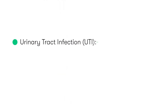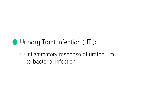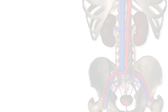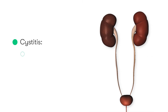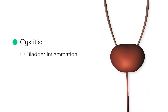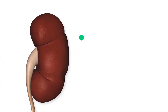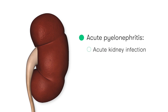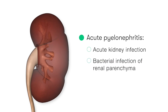Starting with some simple definitions: urinary tract infections, or UTIs, describe an inflammatory response of the urothelium at any point along the urinary tract, typically as a result of bacterial infection. Cystitis is when inflammation and infection is located within the bladder, whereas acute pyelonephritis is an acute inflammation of the kidney involving bacterial infection of the renal parenchyma. Acute pyelonephritis can be a very serious condition, putting the kidney at risk.